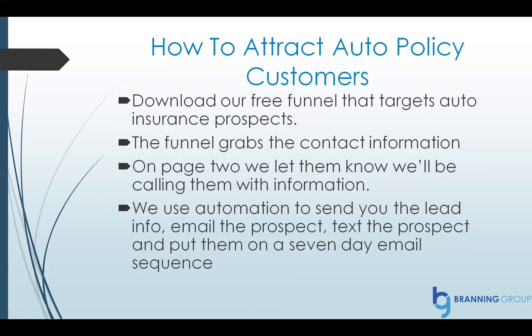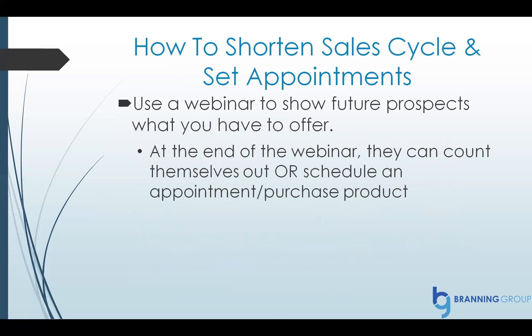Second thing — auto policy. You can download our free funnel that specifically targets auto insurance prospects. The funnel grabs the contact information of the prospect on page two. You let them know we're going to be calling you with information. We send them a text using automation, a quick email, and then we send you an email. Then we put them on a seven-day email sequence so they hear from you every day for the next seven days.